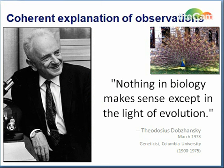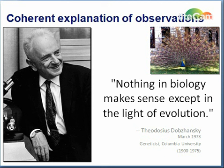In summary, there are four types of data that document and support Darwin's view of evolution: direct observations, homology, the fossil record, and biogeography — and all of these go together. Dobzhansky, a famous geneticist from Columbia University, sums this up by saying: "Nothing in biology makes sense except in the light of evolution."